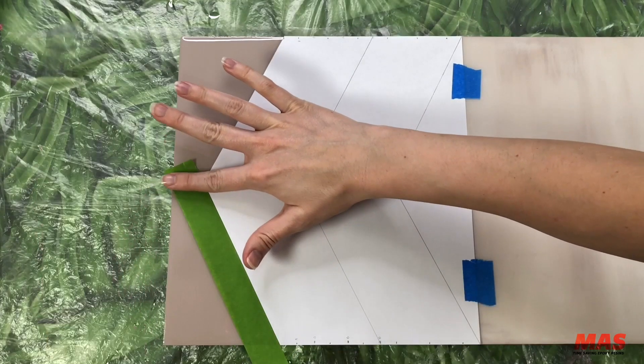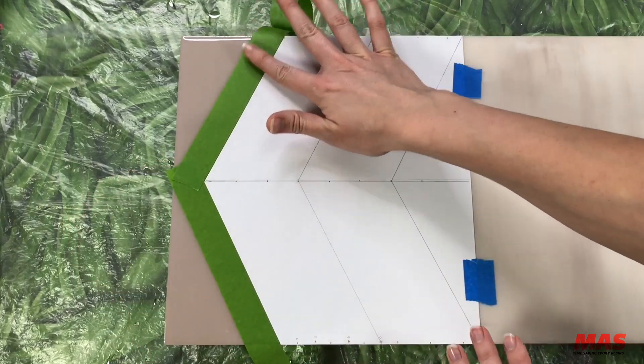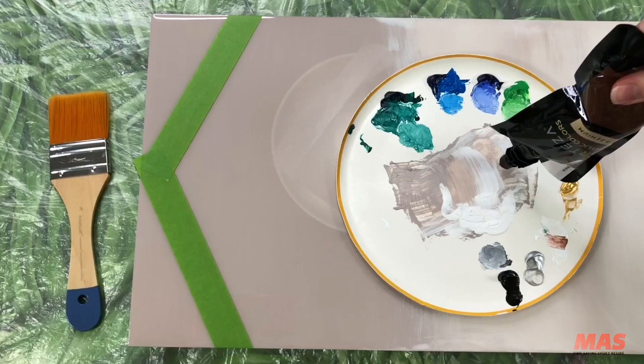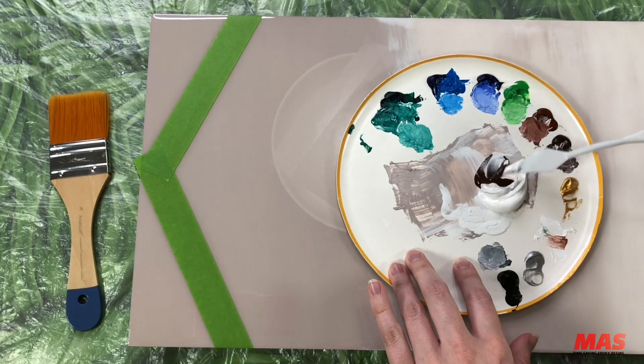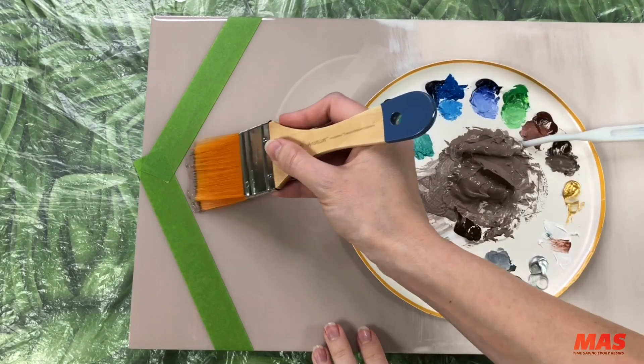Next we're gonna mask off our design. To make the masking process a little easier I sketched out a simple chevron template with just a piece of paper a pencil and a straight edge.